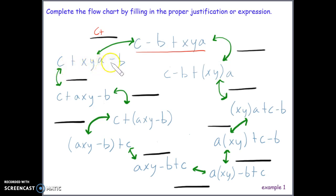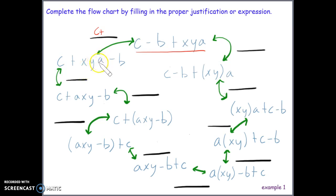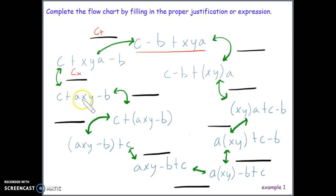Now comparing the next two expressions connected by an arrow — C XYa − B to C + a XY — did the order change? Yes: XYa became aXY. Were the symbols being multiplied or added? We use 'symbols' because we don't yet know if they are factors or terms. There are no addition signs between them, so they are being multiplied. This is the commutative property of multiplication.